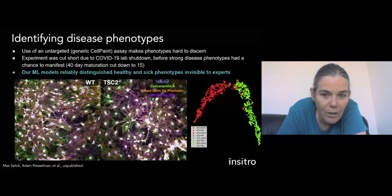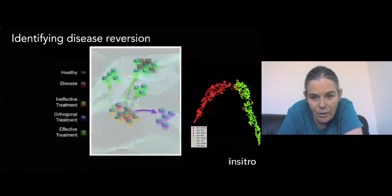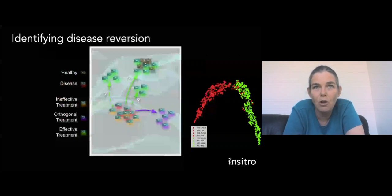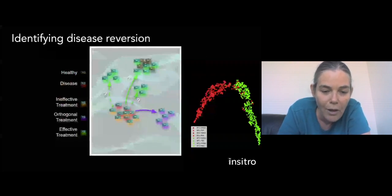So we tried to, we tested this hypothesis by looking at a number of different treatments. Two that were controls that had no effect whatsoever. We had two that were brain penetrant and had an effect on phenotype, but not treatments for the disease. And two that were known actors on the mTOR pathway that we knew reverted the disease.